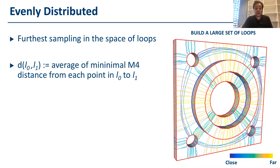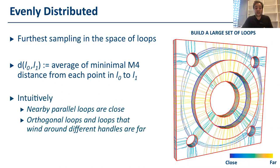So, intuitively, if two loops are parallel and they are close in the shape, they are also close in this distance function. But if they intersect orthogonally, they most likely will be far away because they sample two different fields.